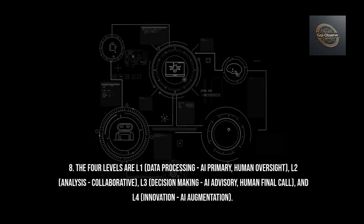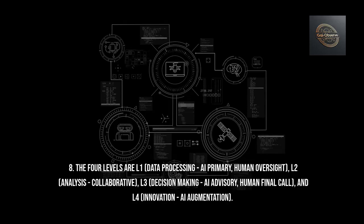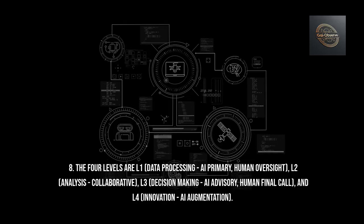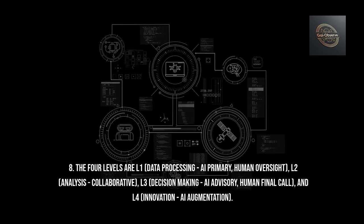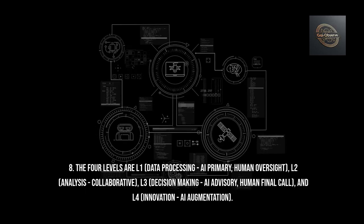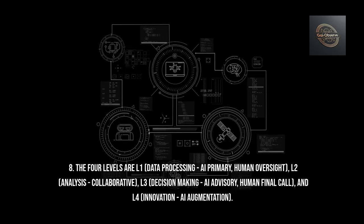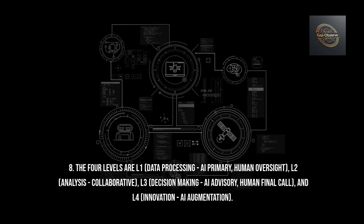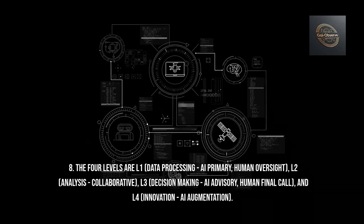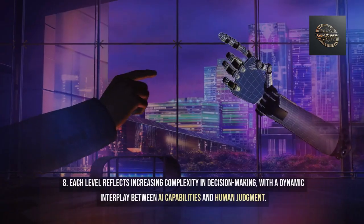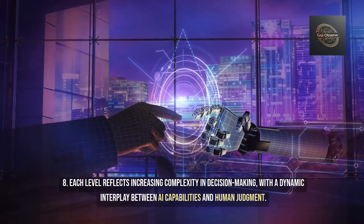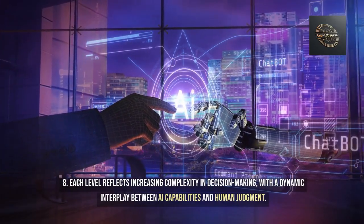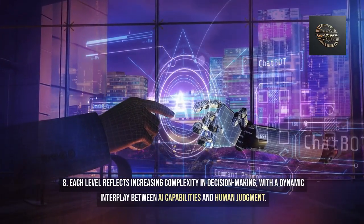Answer 8: The four levels are L1 (data processing — AI primary, human oversight), L2 (analysis — collaborative), L3 (decision-making — AI advisory, human final call), and L4 (innovation — AI augmentation). Each level reflects increasing complexity in decision-making, with a dynamic interplay between AI capabilities and human judgment.